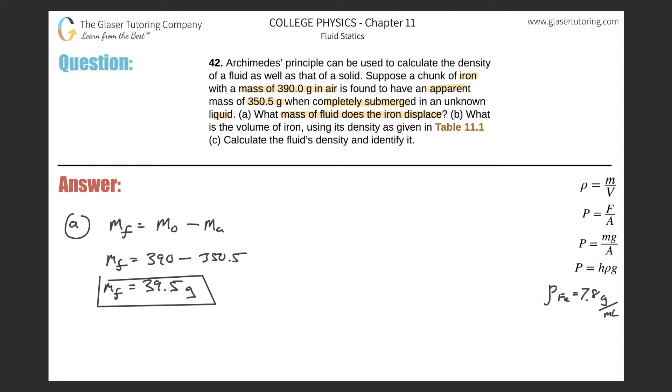So now for letter B, let's see what it says. What is the volume of iron using its density as given in the table? The density given of iron in the table is going to be 7.8 grams per milliliter. And if we write out the formula for density relating it to mass and volume, we realize that the density of iron will be equal to the mass of iron divided by the volume of the iron.